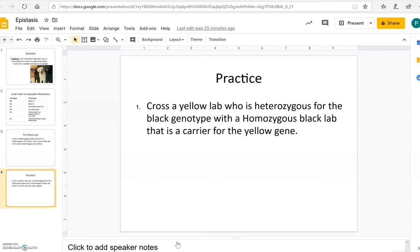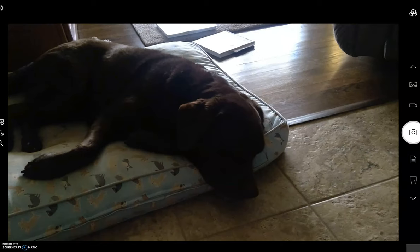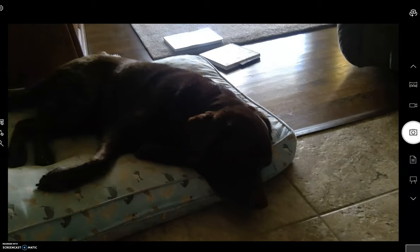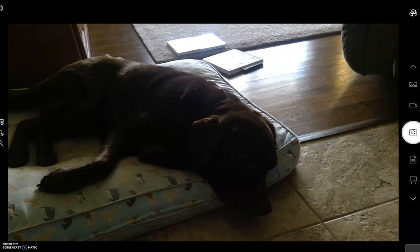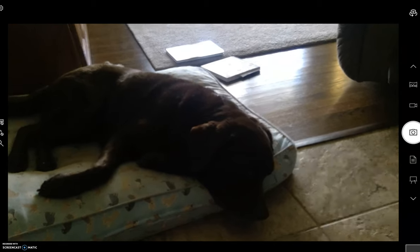Here's one for you to practice. I want you to cross a yellow lab who's heterozygous for the black genotype with a homozygous black lab that is a carrier for the yellow gene. Go ahead and try that one out and I'll get the answer posted to you maybe tomorrow. As you guys can tell, Cooper is super excited about being in this video. Keep checking class and I'll keep putting new things up there. Email me with any concerns that you may have.